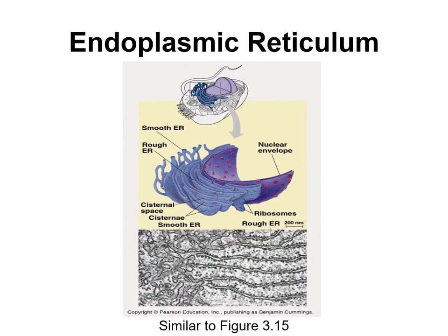Looking at images of the two types: here is the rough endoplasmic reticulum — notice the ribosomes and how flat the cisternae are. Compare that to the smooth endoplasmic reticulum, which is more tubular and round in shape, branches more, and of course lacks the ribosomes. You can see this distinction under the microscope as well.